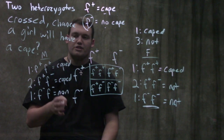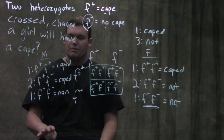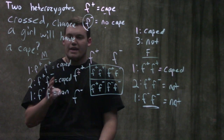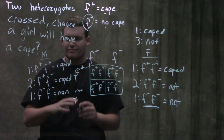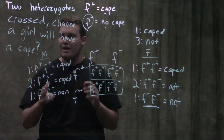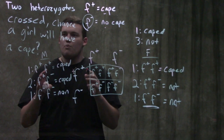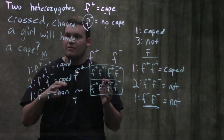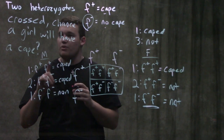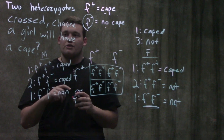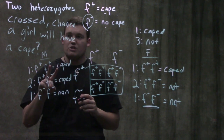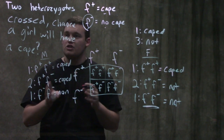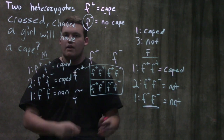Everything about dominance depends entirely on whether we're talking about males or females. Always do your Punnett square first, get your genotypic ratios, and don't jump straight to phenotypic ratios. Then look at each sex: if the trait is dominant you only need one allele; if it's recessive you need two of those alleles to show the trait.